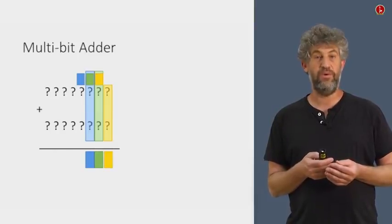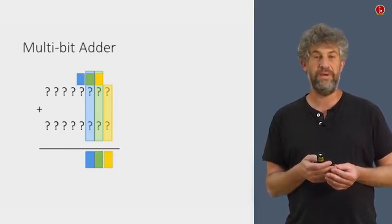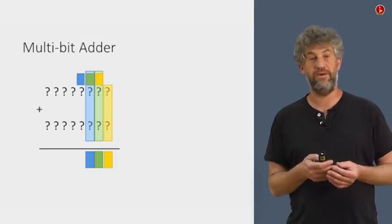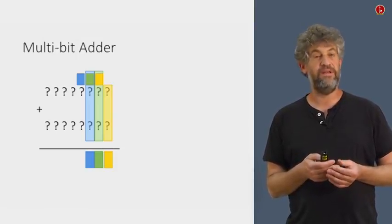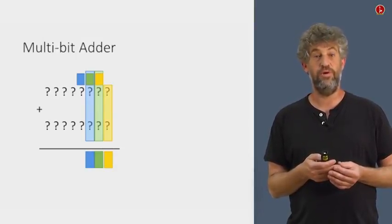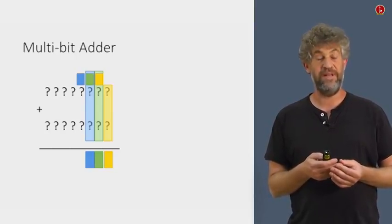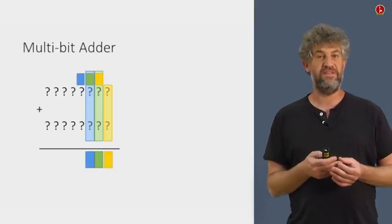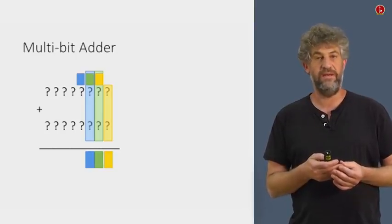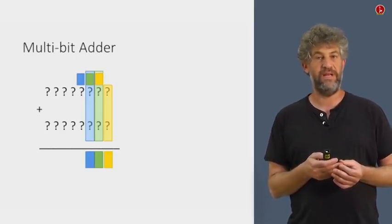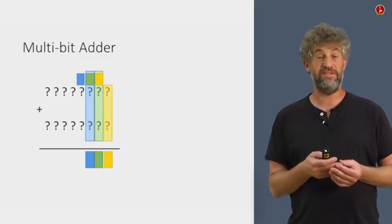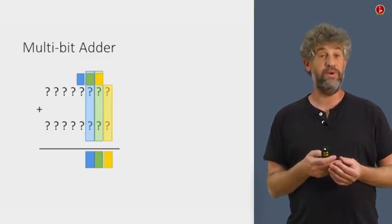Now we take the green carry, add it to the two blue bits. Each one of these colored steps is simply a full adder now. The thing that takes that yellow carry, the two green bits, and outputs a green carry and a green sum, that's just a full adder, and that already we've implemented.